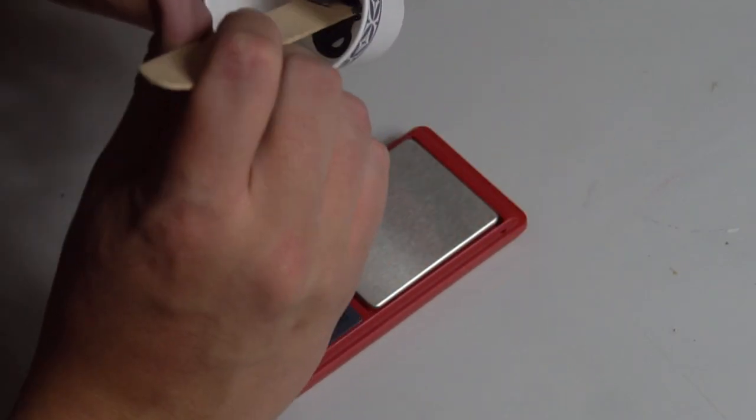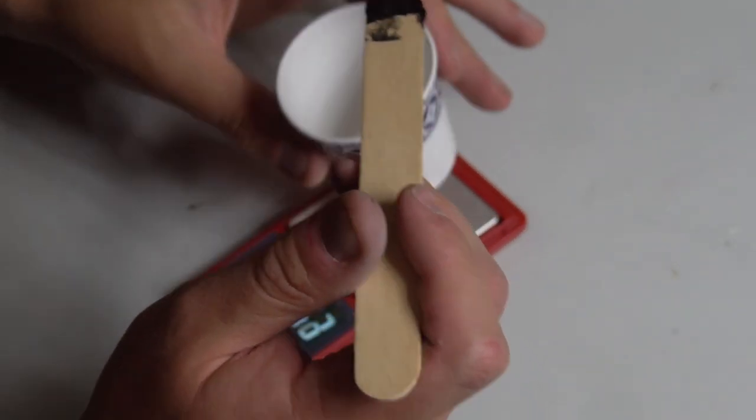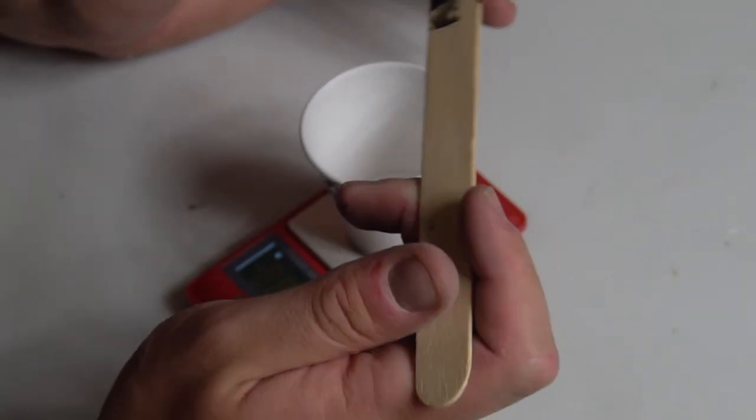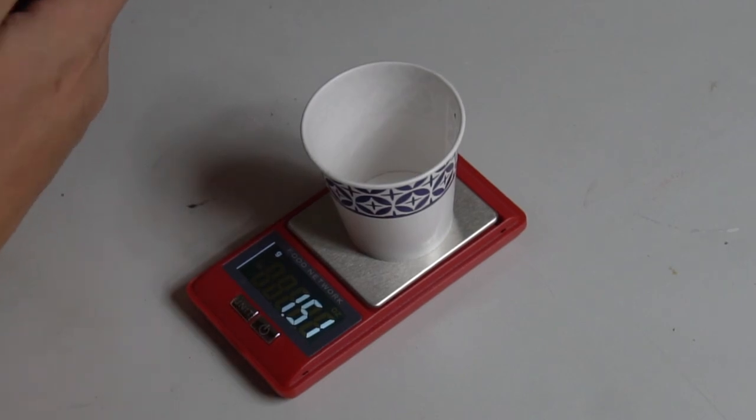It uses a ratio of 100 parts of the black resin to 16 parts of the goldish hardener. You'll want a good digital scale to mix this epoxy accurately because if you get that ratio a little bit too off it's not going to cure properly.